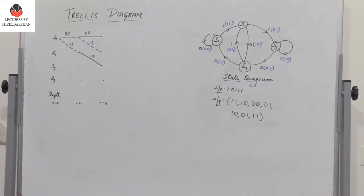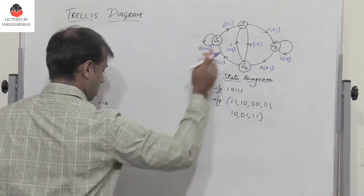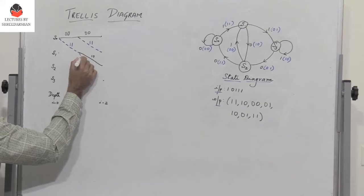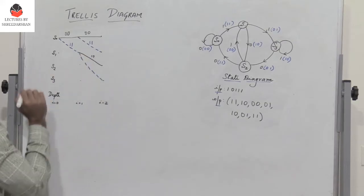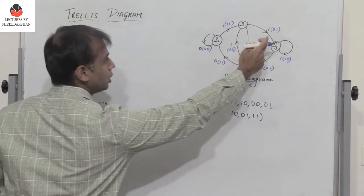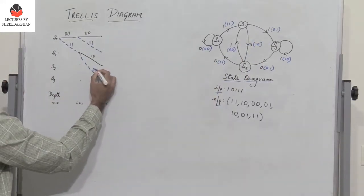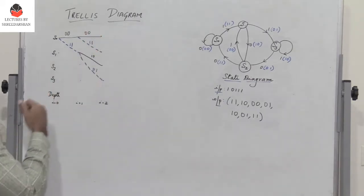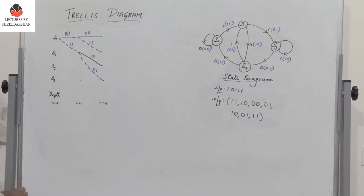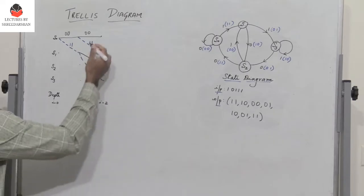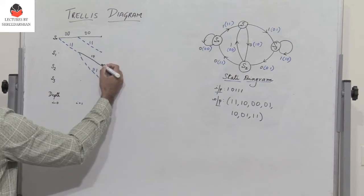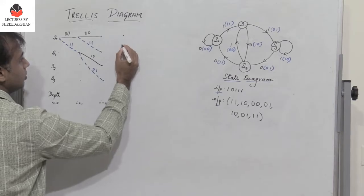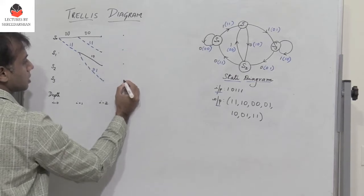If I get input 1 from state s1, then I go to s3, indicated by a dashed blue line, with output 0,1. So after two stages, I have got this. Now for the next stage, I will get the complete diagram. The inputs at this point are states s0, s1, s2, and s3.